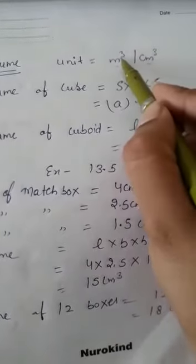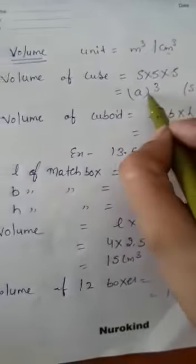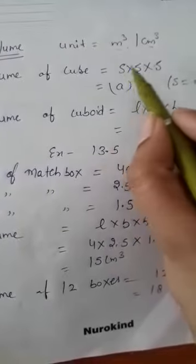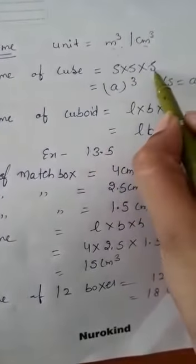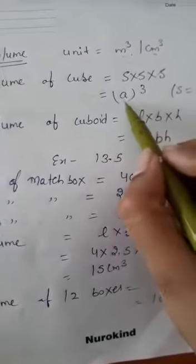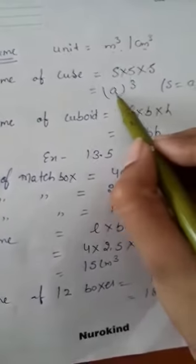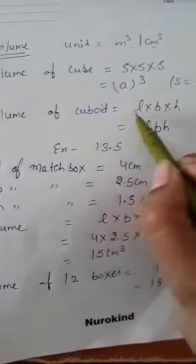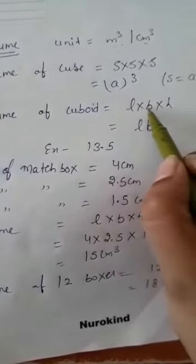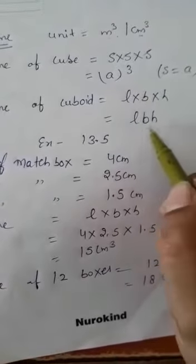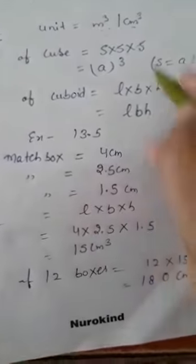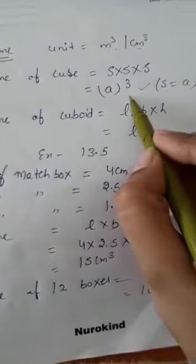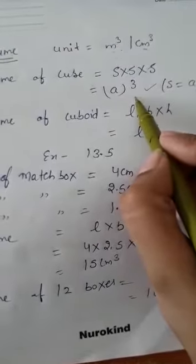We use cube because in volume we are multiplying all three dimensions. So volume of cube is side × side × side, or you can say a³ where a is the side. Volume of cuboid is length × breadth × height, that is l×b×h. So these two formulas will be used in this exercise: volume of cube = side³, and volume of cuboid = l×b×h.